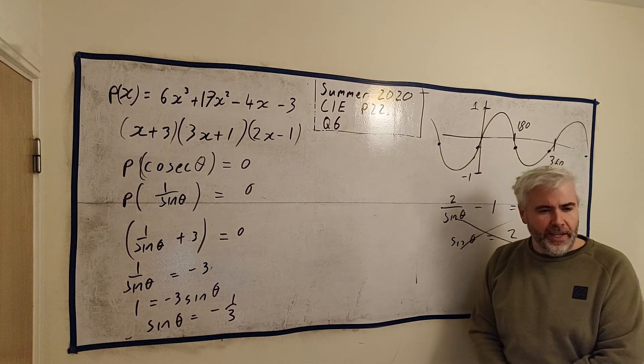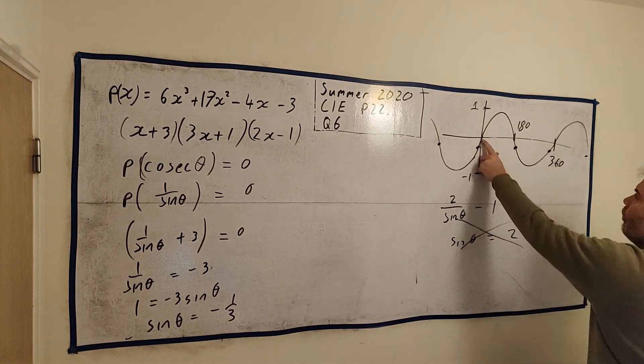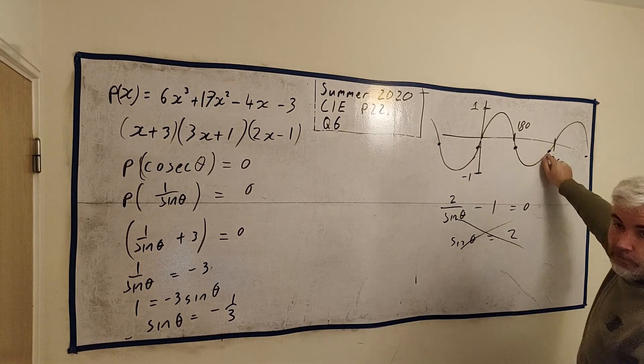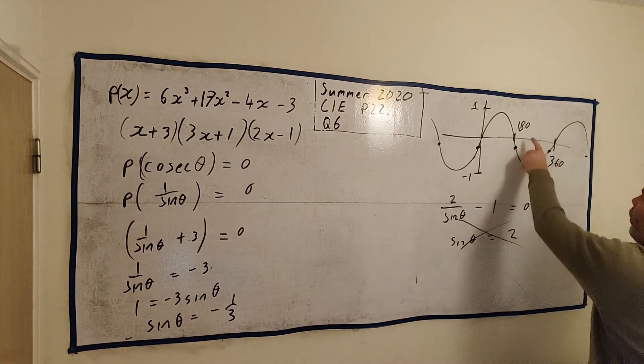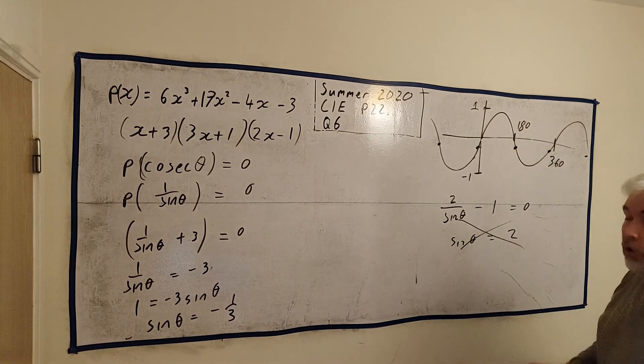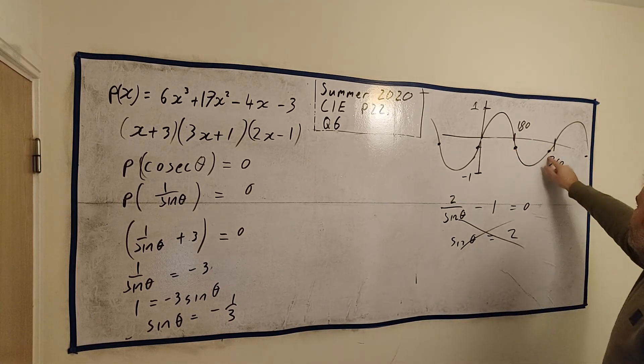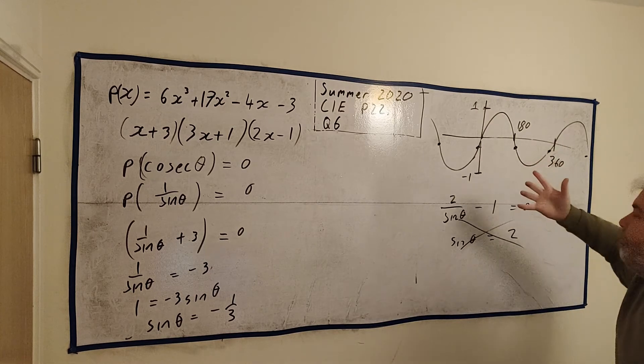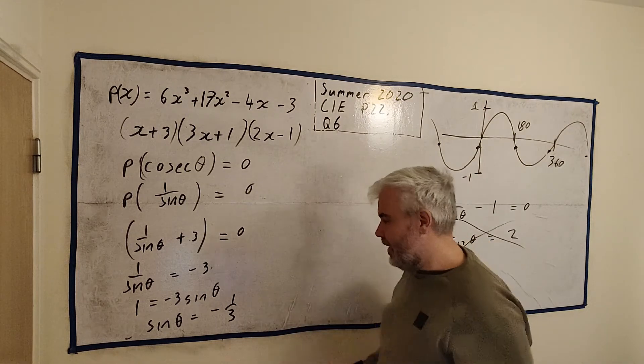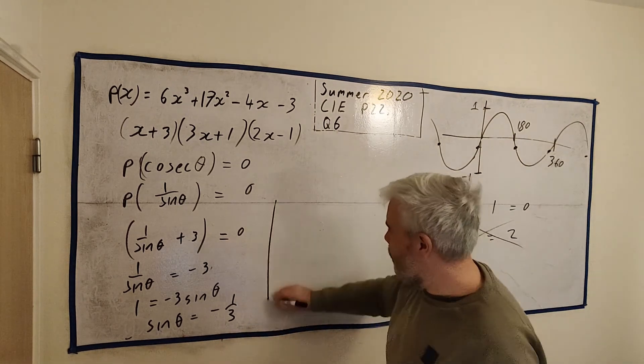But they don't want all of them. They only want the answers between 0 and 360. So here's the two answers. We know roughly what they are. 180 plus a little bit. So we'll say about 200. And 360 minus a little bit. We'll say about 340. So I know roughly what the answers are. Let's find out the exact numbers.